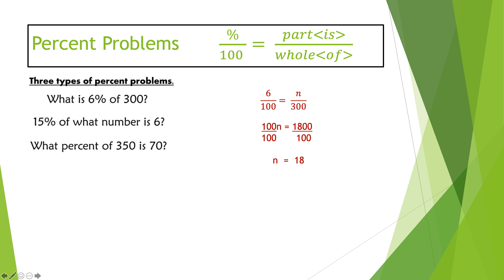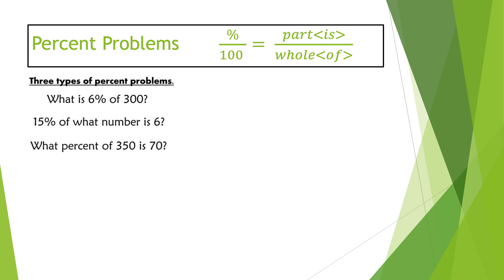Dividing both sides by 100 gives n equals 18. For those who feel comfortable with percents, the answer of 18 makes sense: six percent means six out of 100. With 300 in the problem, there are three sets of 100, and each set of 100 contributes a six, so three times six is 18. Now let's try the next one: 15 percent of what number is six?